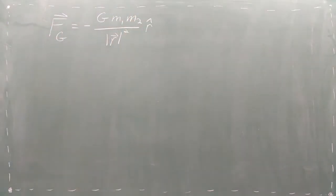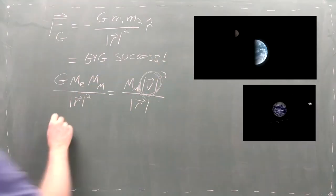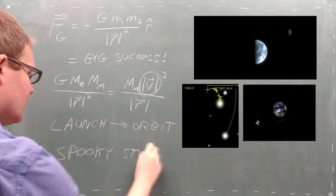The equation for the gravitational force is one of the biggest successes in physics. It tells us how fast the moon is traveling around the Earth, shows us how to get a satellite into orbit, and helps us find dark matter and black holes.